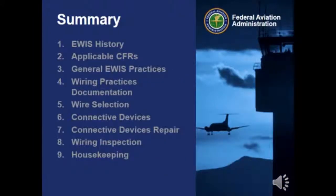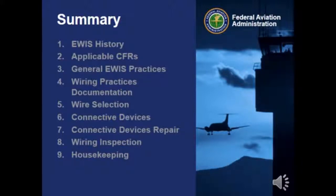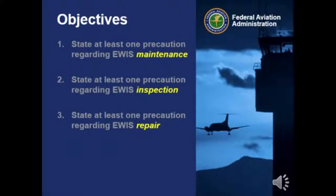As a brief summary: we talked about the history of EWIS and problems in the past, and how the FAA is helping to mitigate those problems for the future. We talked about the rules, general practices, documentation, wire selection, and connective devices. Connective device repair will be a hands-on workshop developed in the future. Wiring inspection and housekeeping were also covered. Thanks and have a great day.